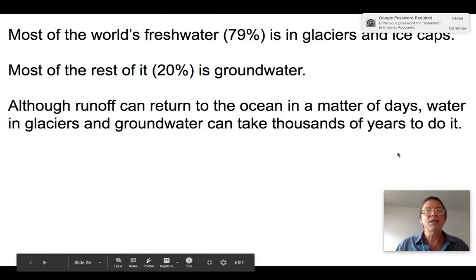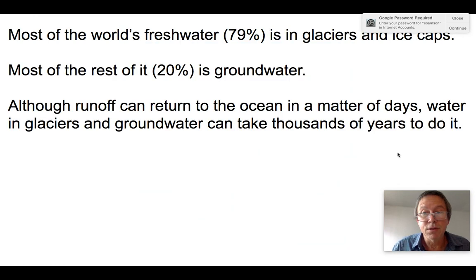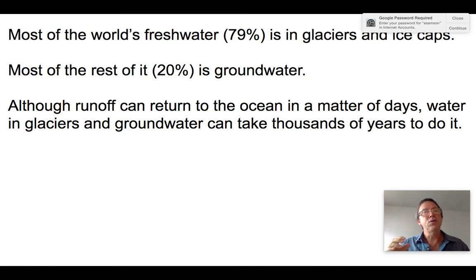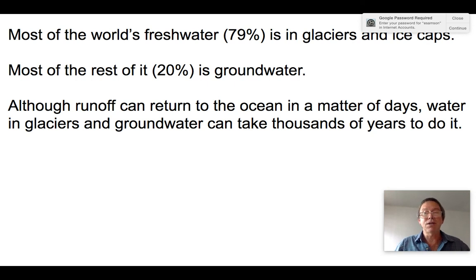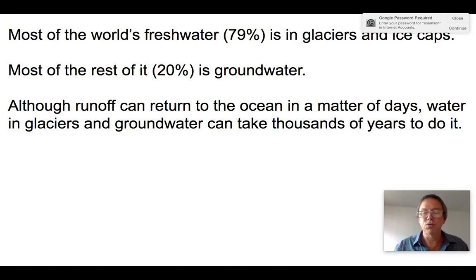Fresh water is of vital importance to terrestrial life. Of the world's fresh water: 79% is in glaciers and ice caps, 20% is groundwater — which does feed rivers, importantly — and at any point in time only about 1% of the fresh water on the planet is actually accessible, though a lot of it is accessible as soil moisture.